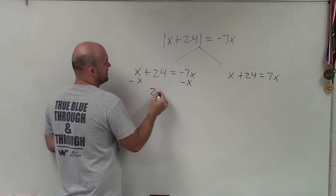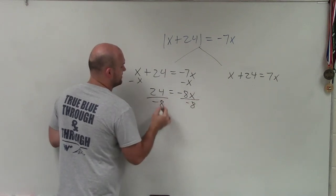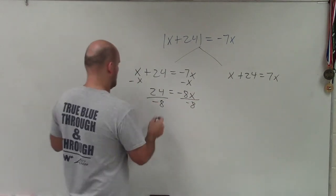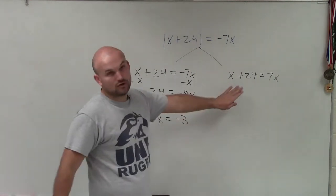So I'll subtract an 8x, so I have 24 is equal to negative 8x, divide by negative 8, and x equals negative 3.